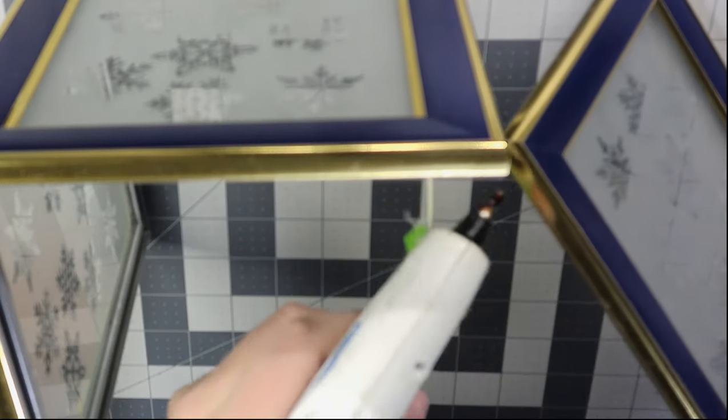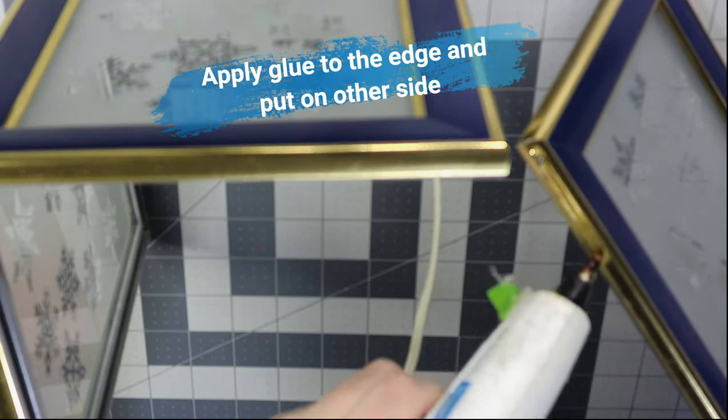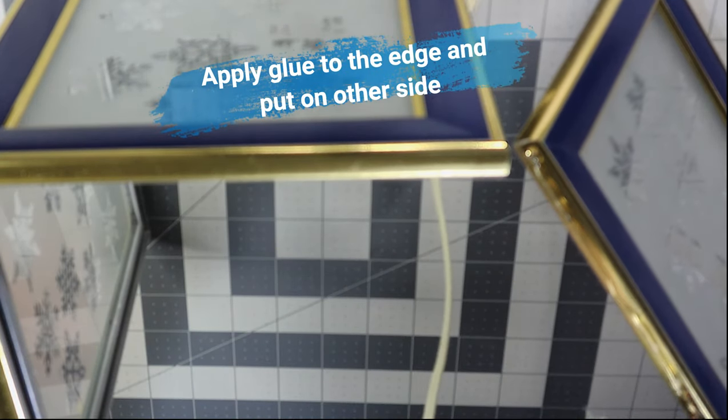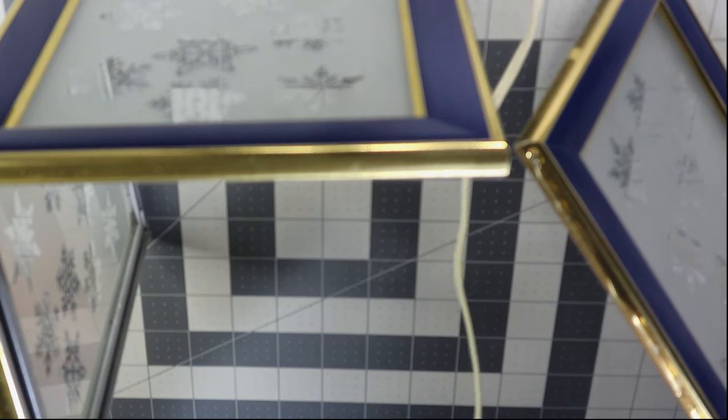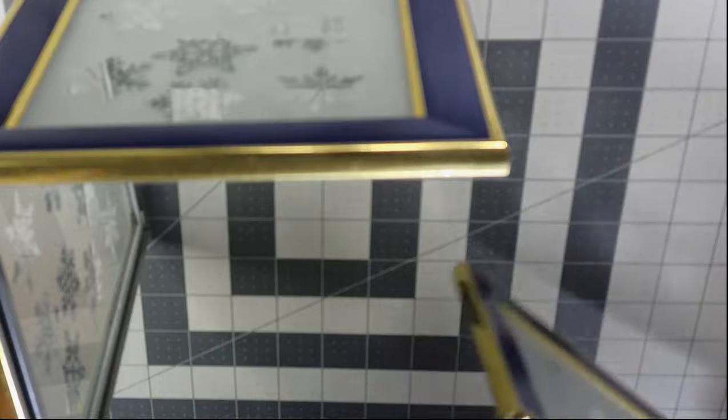Now you're going to glue the edge of the third frame. This is the long edge, by the way, and you are going to do the same thing but on the other side. Now you should have a U shape.